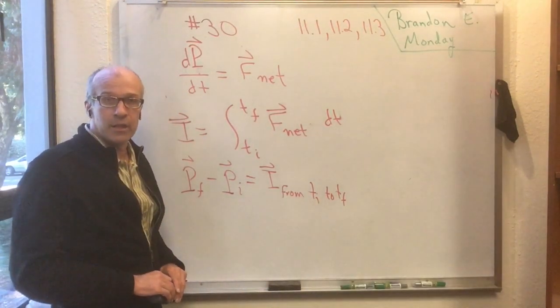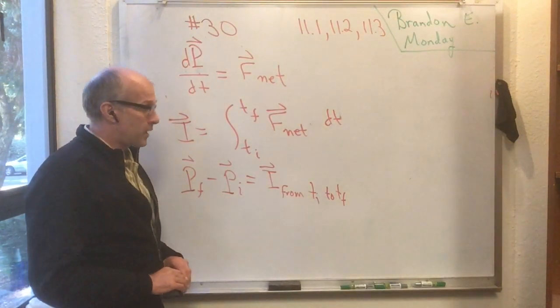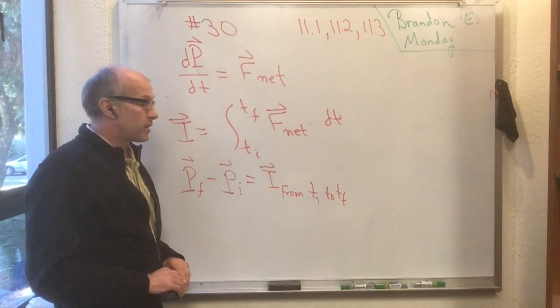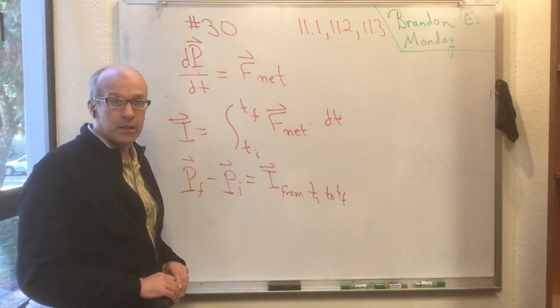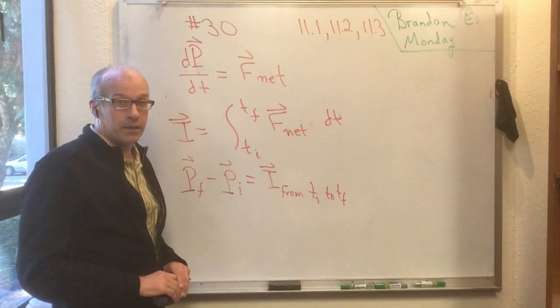Okay, so all you have to do is reinterpret what you mean by F_net, and then this equation is then true. And this equation becomes the definition of the impulse. This equation becomes capital P_final minus capital P_initial is the total impulse, which you calculate from all the external forces in the system integrated from t_initial to t_final.